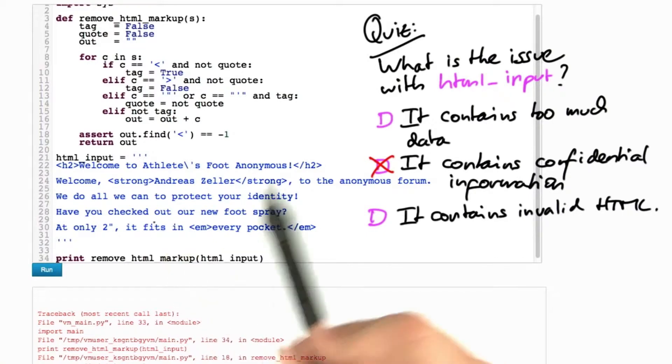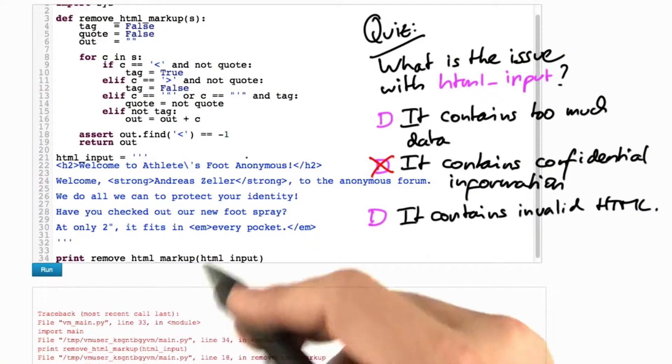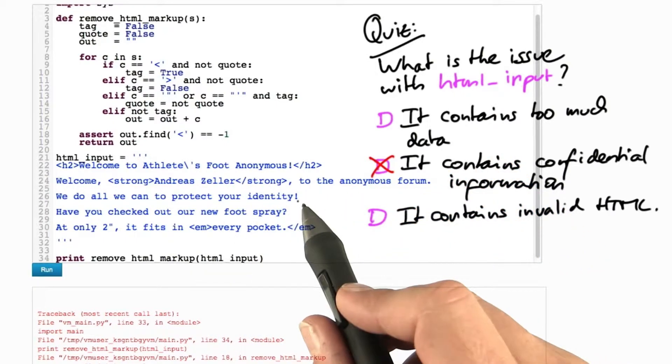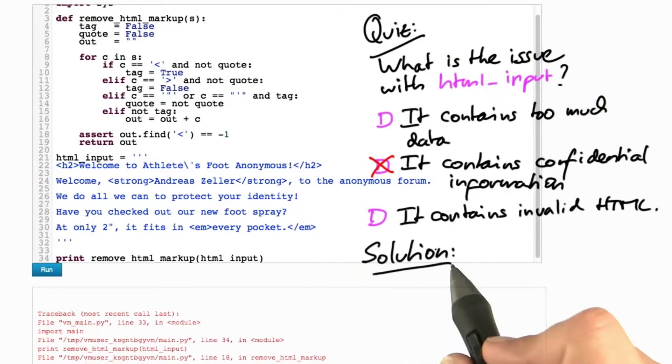And if we send around this data in order to reproduce the bug, this means that the sensitive data may be out of control. This means that developers may get access to it with plenty of possible issues that follow. There are multiple solutions to that.